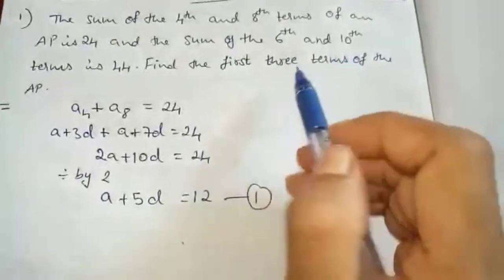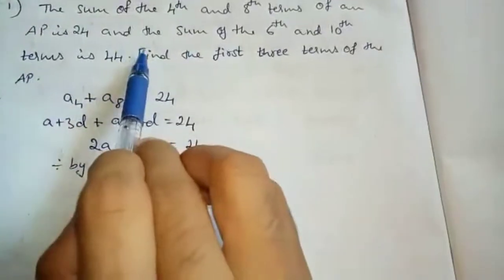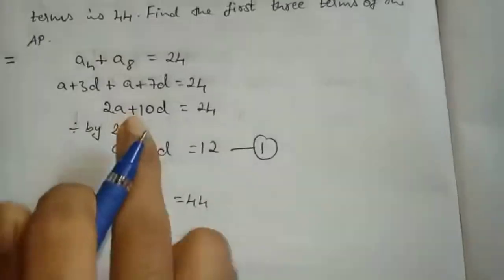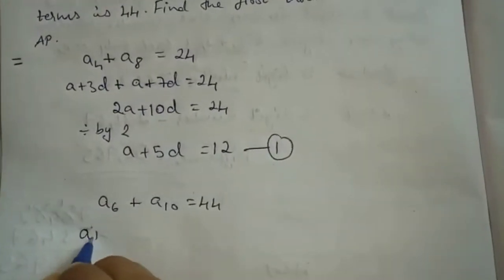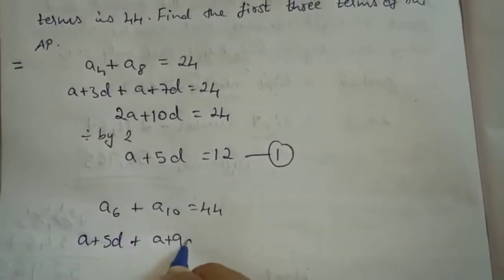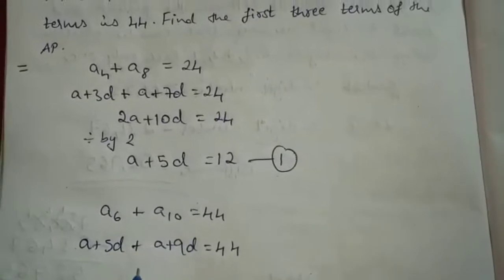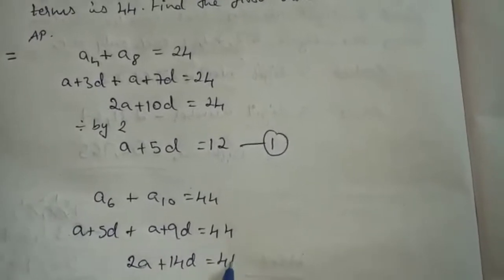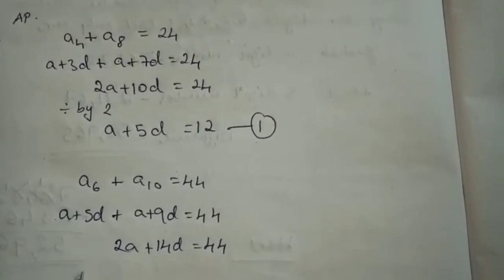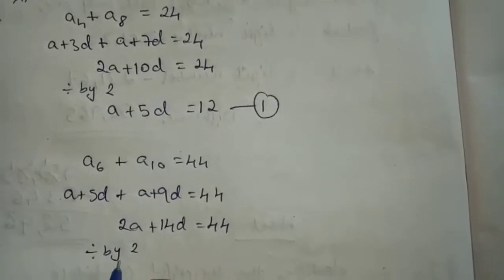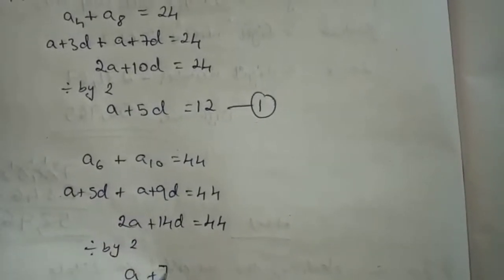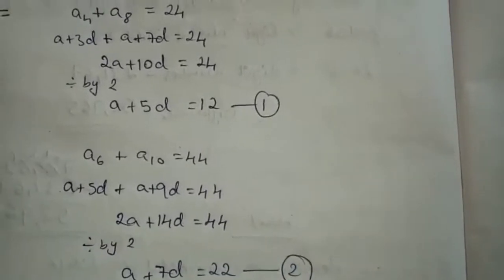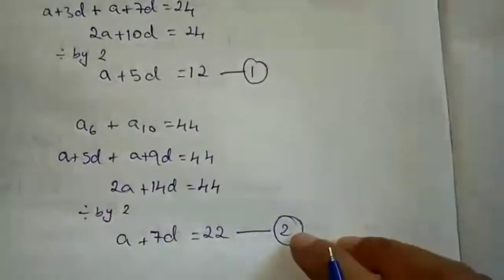Next, one more condition: 6th and 10th term sum is 44. So A6 plus A10 is 44. Same way elaborate: A plus 5D plus A plus 9D equals to 44. A plus A is 2A, and 5 plus 9 is 14D, equals to 44. Again these are multiples of 2, so divide by 2. What you get: A plus 7D equals to 22. Take this as equation 2.